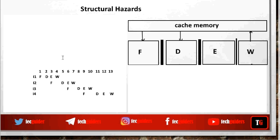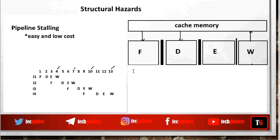With stalling, we get the first instruction out in the fourth clock cycle, and from then on, only one instruction comes out every three cycles. We implemented the pipeline with an expectation of getting one instruction out per clock cycle. So even though pipeline stalling is an easy and low-cost solution, blindly following it can affect pipeline performance. To truly avoid structural hazard, the pipeline structure itself should be properly organized. In the next video we shall see how pipeline stages can be properly organized to avoid the structural hazard caused with respect to memory.